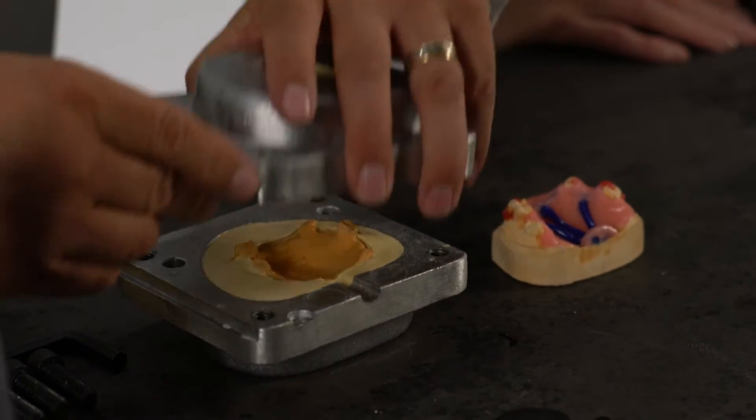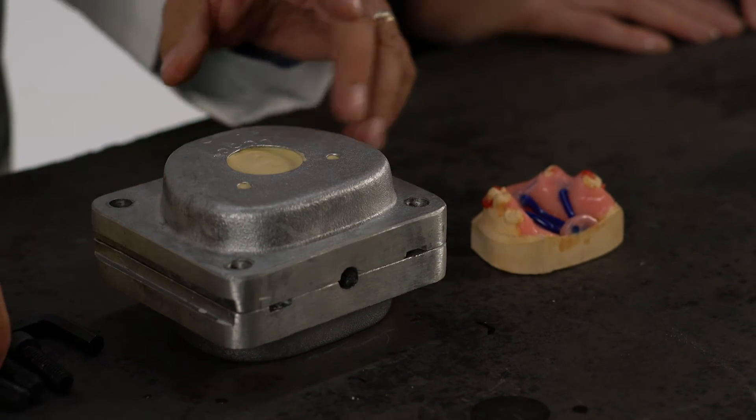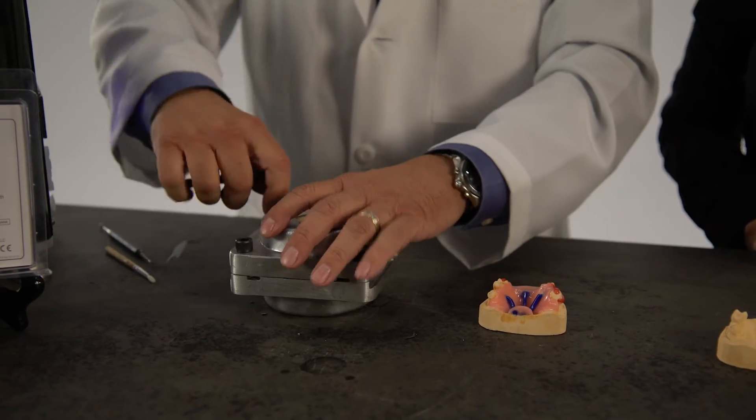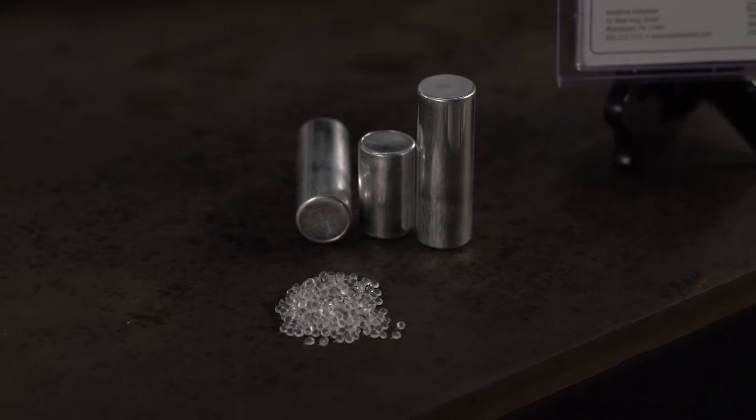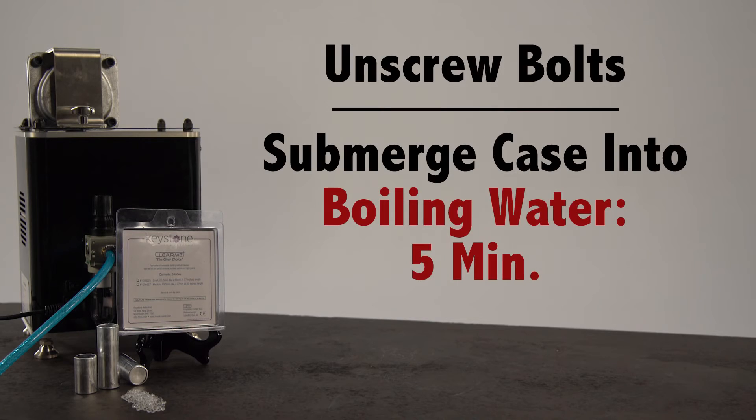Next, apply petroleum jelly to all the gypsum areas, screw down the top half of the flask, and vibrate the stone into the top section of the flask. After the gypsum sets, the case is ready to be boiled out.